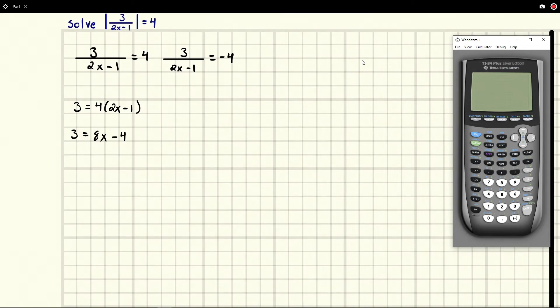Add 4 to both sides and we're going to get 7 equals 8x, and divide by 8 and we're going to get 7 over 8. So that's going to be our first x value.